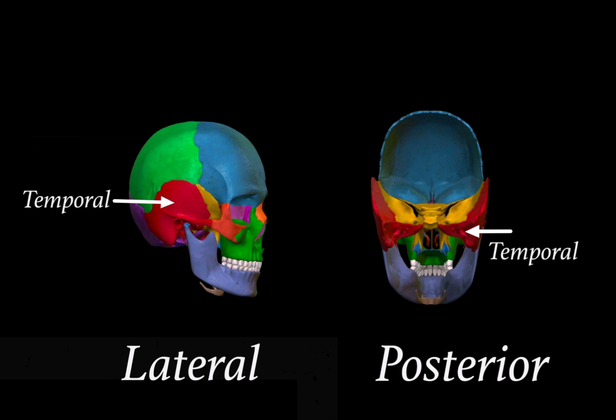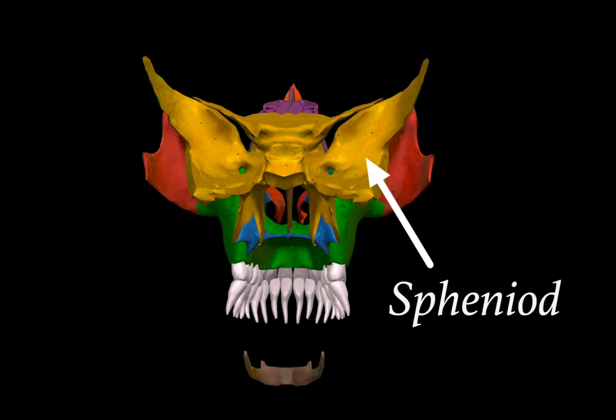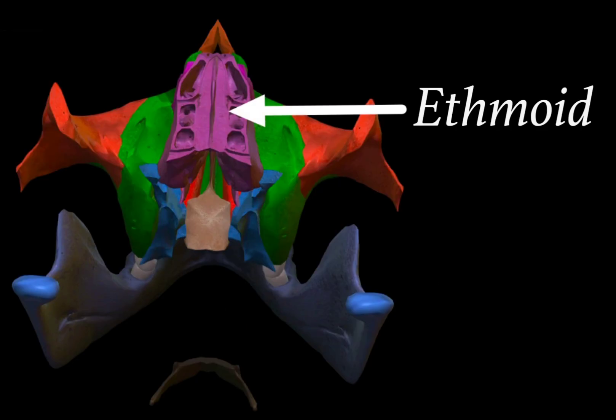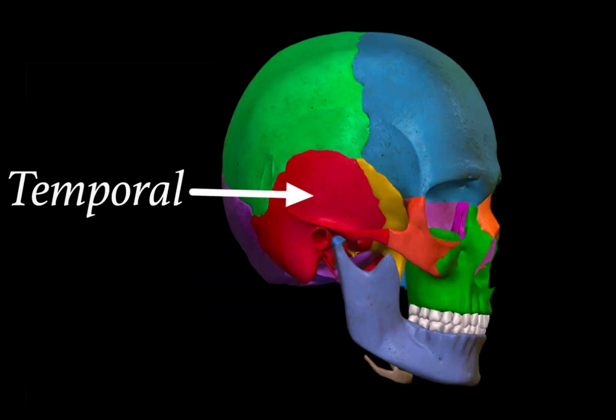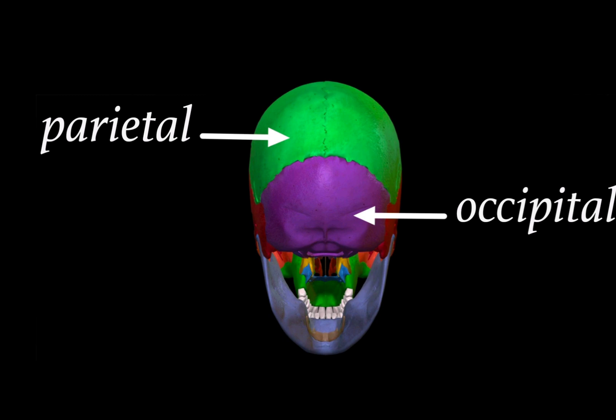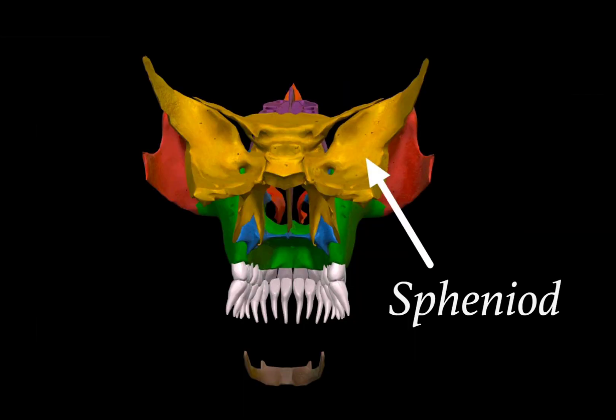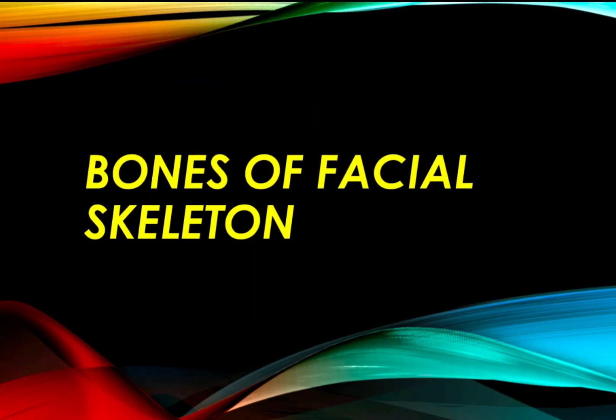When we remove the temporal bone, we find the yellow butterfly-shaped bone, which is the sphenoid bone. After removing the sphenoid, we find the ethmoid bone. This completes the bones of the cranial skeleton: frontal, parietal, occipital, temporal, sphenoid, and ethmoid.